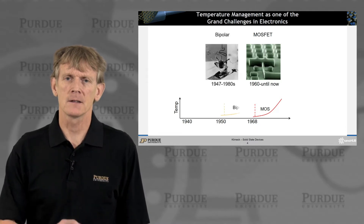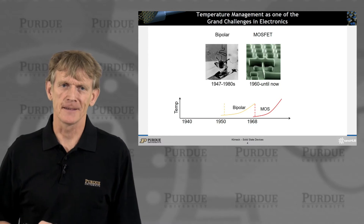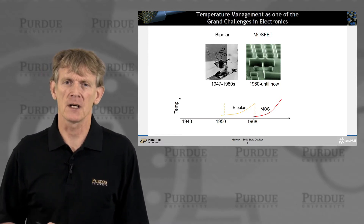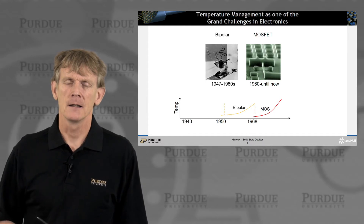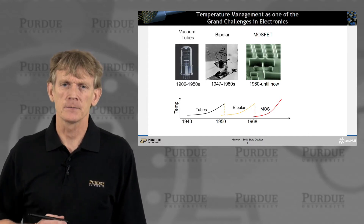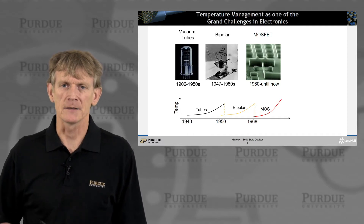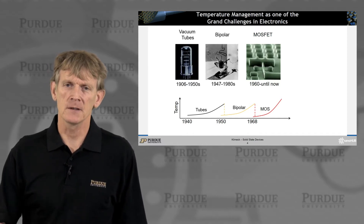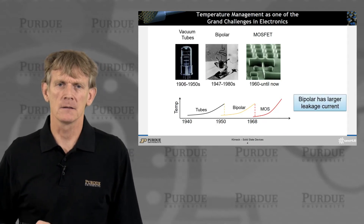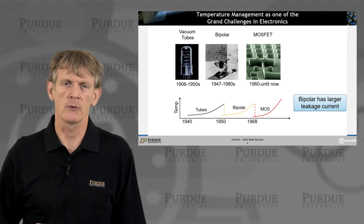Before that, bipolar transistors dominated the market — not as bulky as the one sketched here — and before that we had tubes and relays. What determined the adoption of each technology was really a matter of temperature management and integration density: how many things can you put together in a closed space.